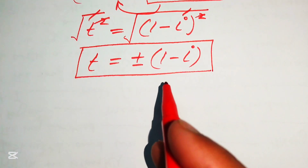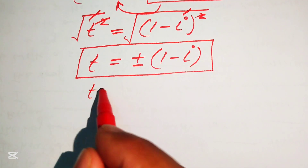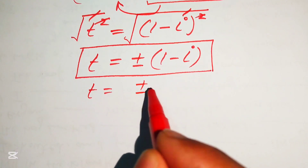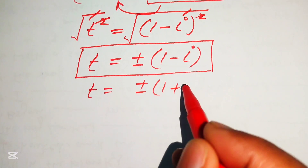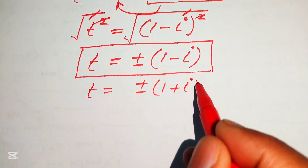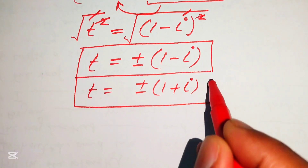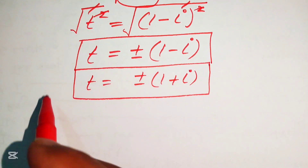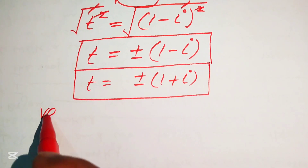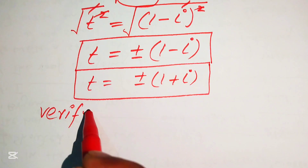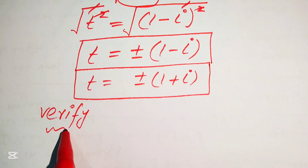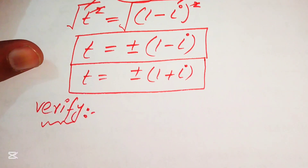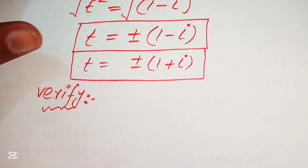So the four complex roots of the given equation are: t equals plus or minus (1 minus i) and t equals plus or minus (1 plus i).